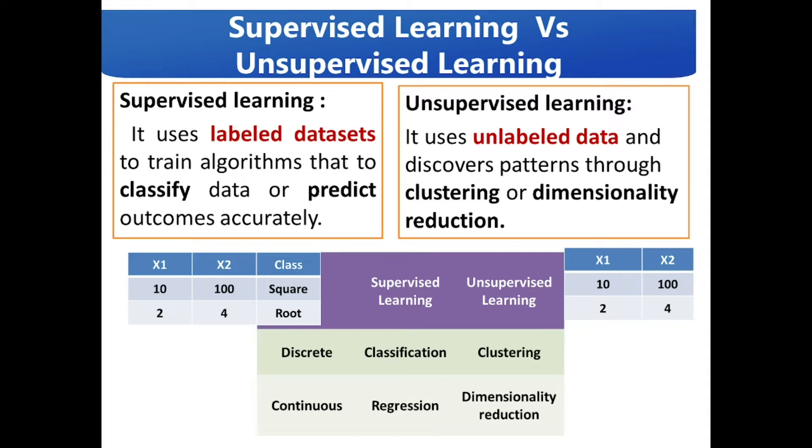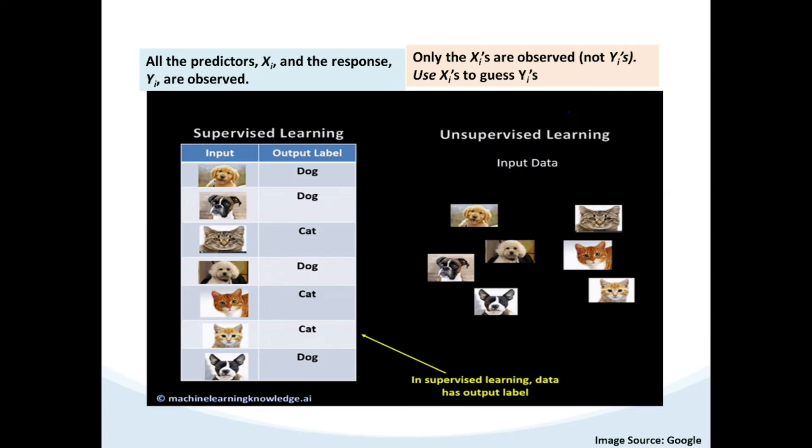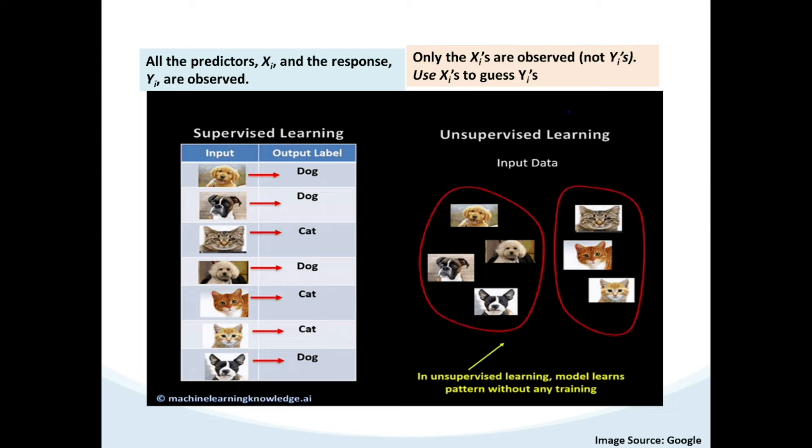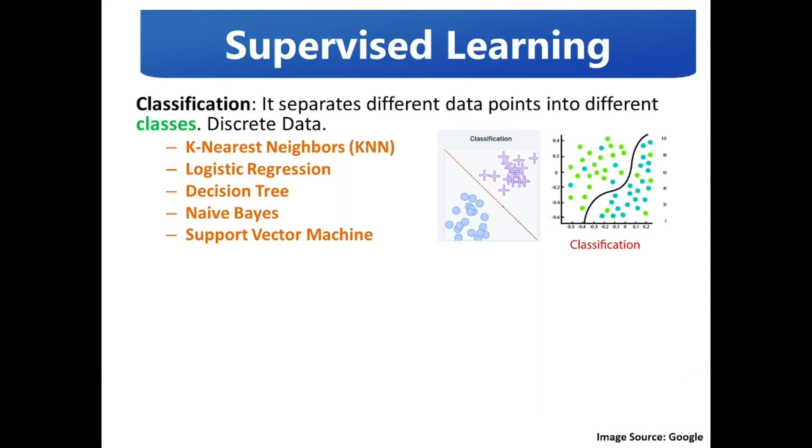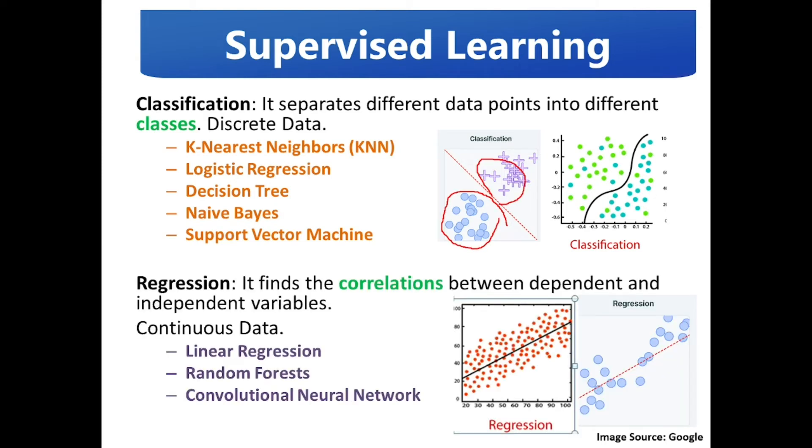Based on the data - whether it is discrete data or continuous data - we have mappings with supervised and unsupervised learning. Supervised learning has two categories: classification and regression. In classification, it separates different data points into different classes as shown in the figure. In regression, it finds a correlation between dependent and independent variables as depicted in the figure.